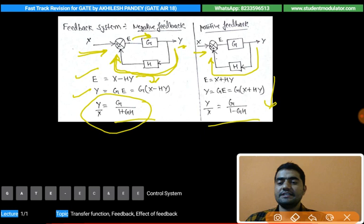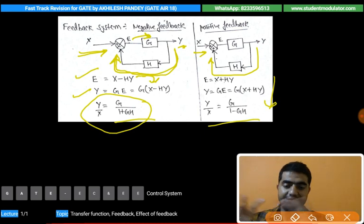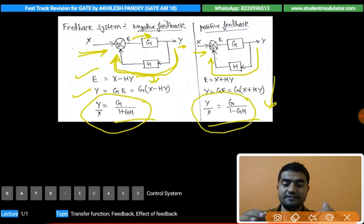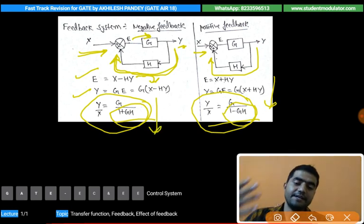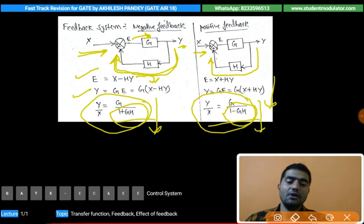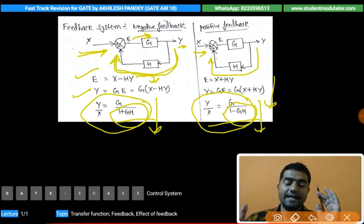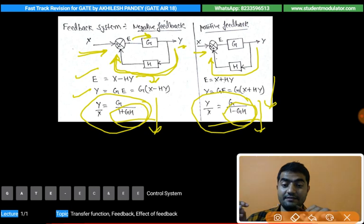For negative feedback the overall transfer function is G/(1 + GH), where G is the forward gain and H is the feedback factor. For positive feedback it is G/(1 − GH). The key difference is that in negative feedback we divide by (1 + GH) — a larger factor — so gain is reduced. In positive feedback we divide by (1 − GH) — a smaller factor — so gain increases. Before covering the effect of feedback, let's look at a previous GATE question on this formula.